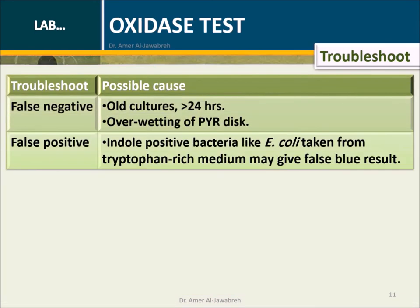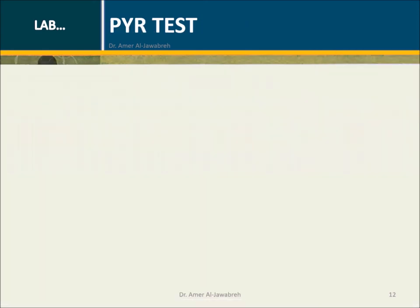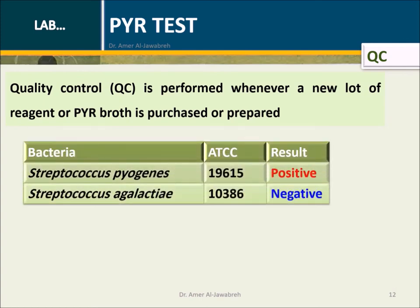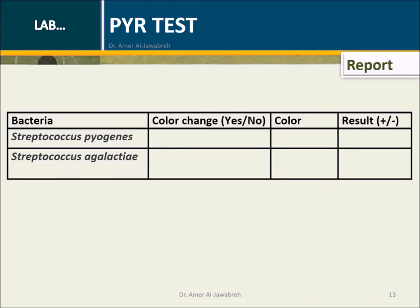Interpretation: PYR test positive bacteria listed. Troubleshooting with probable causes. QC is performed whenever a new lot of reagent or PYR broth is purchased or prepared. Listed below are ATCC bacteria and their corresponding expected results. Use the table shown for reporting results.